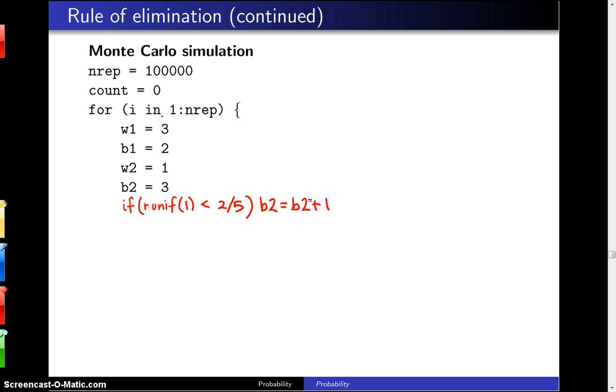Now we could go back and decrease the number of black balls in the first urn by 1, but it turns out you don't need to do that. And so we'll just do this only. If that is not true, then it turns out we have pulled a white ball out of the first urn. And in that case, we want to increase the number of white balls in the second urn by 1. That takes care of the first draw out of urn 1.